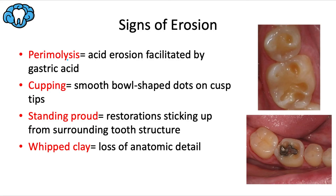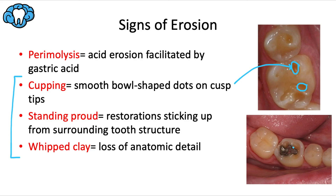Perimolysis is the term for acid erosion due to gastric acid. There are three telltale signs of tooth erosion. Cupping refers to smooth, bowl-shaped dots on the cusp tips — acid is dissolving tooth structure, not wearing it away. Restoration standing proud refers to the fact that tooth material dissolves faster than the restoration, so the restoration ends up protruding relative to surrounding tooth structure. The whipped clay effect describes loss of anatomic detail — a loss of ridges and grooves as enamel melts away.